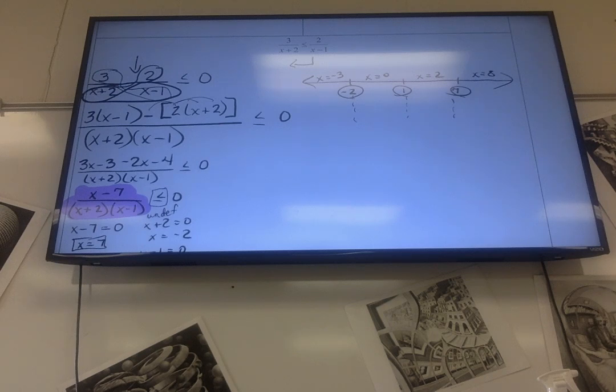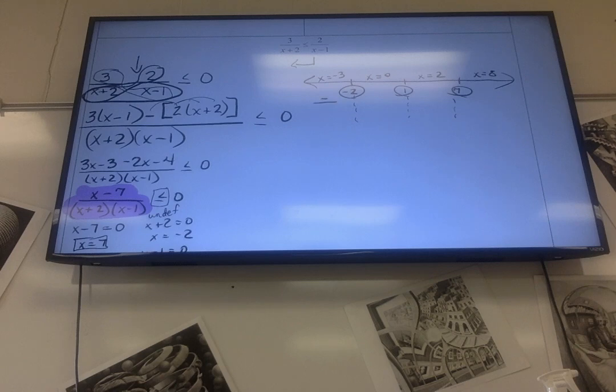So notice if I'm plugging negative 3 into that top, that's going to be a negative on top. And I'm plugging negative 3 on the bottom, I'm going to get negative times a negative, so that's positive. That's going to be a negative over a positive. Plug in zero, get a negative on top because zero minus 7 is negative 7, and I get a positive times a negative. Negative over a negative is positive. So plug in 2, I'm going to get a negative over a positive times a positive, so that's a negative. Plug in 8, get a positive over a positive.